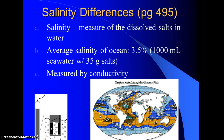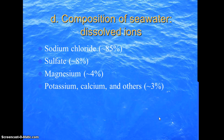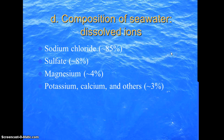Moored and floating buoys constantly measure salinity around the world. This image shows the variation in salinities globally. Sometimes you'll see values like 35 instead of 3.5% — that's just a different unit representation. The salts in the ocean are approximately 85% sodium chloride, about 8% sulfate salts, about 4% magnesium salts, and about 3% others including potassium and calcium.